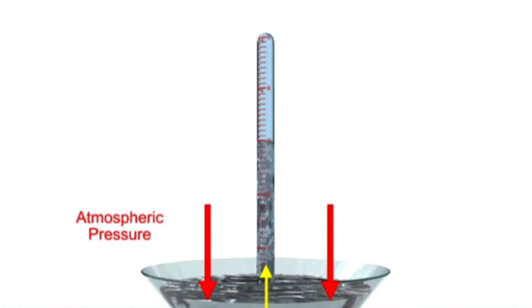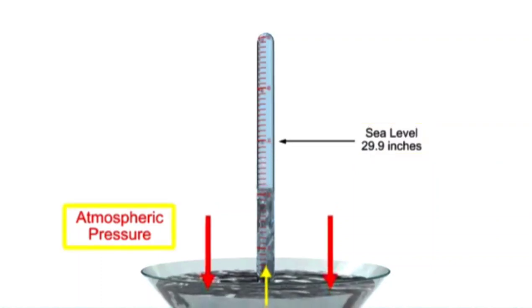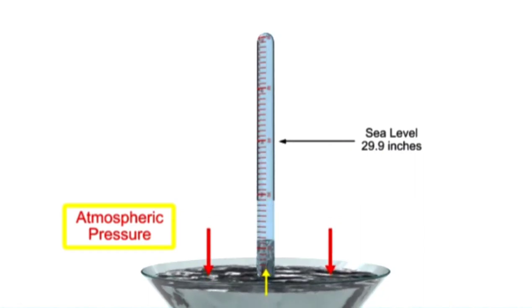At sea level, the elevation of mercury will stand at about 29.9 inches of mercury. As the atmospheric pressure decreases, the height of the mercury in the tube decreases.